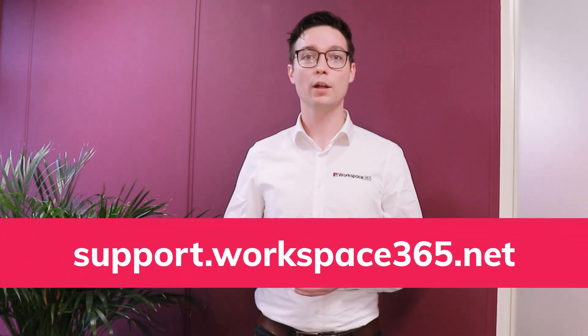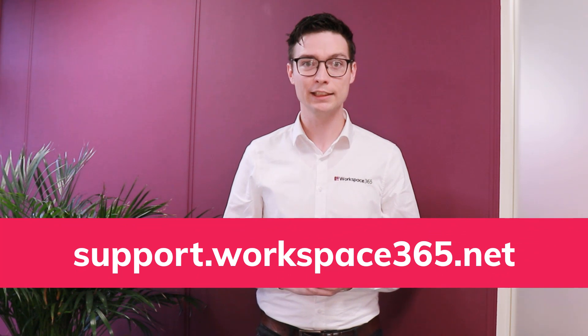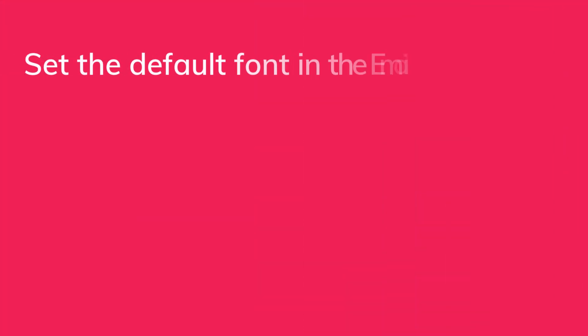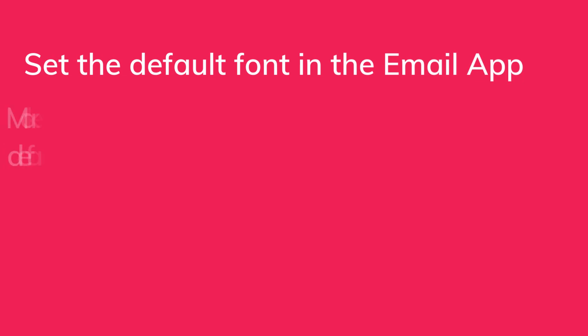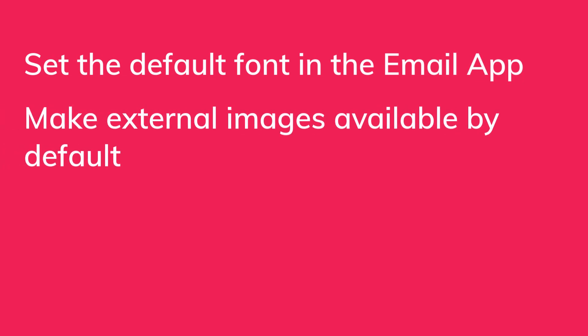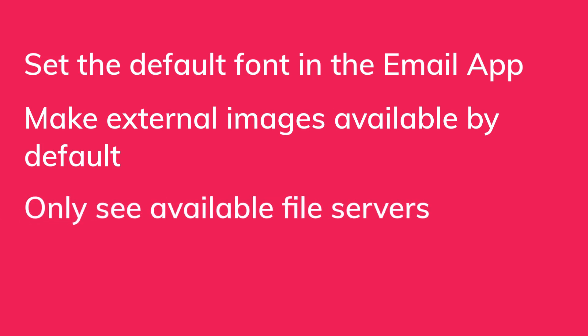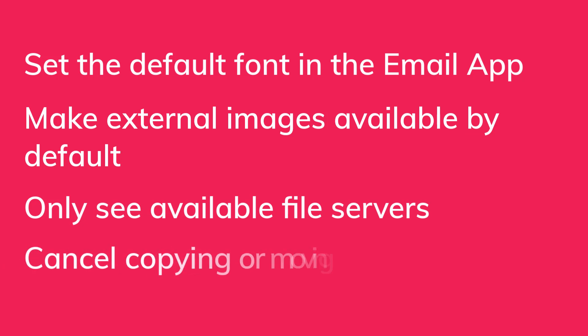These were the highlighted features of update 3.7. Don't forget to check the release announcements on our support portal at support.workspace365.net, where you will find more features. For instance, you can now set the default font in the email app, have external images available by default in the email app, only the file servers available to a user are listed in the document, and we've added the possibility to cancel the process of copying or moving documents.